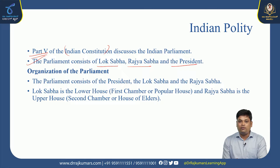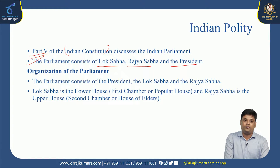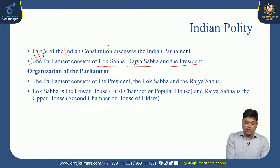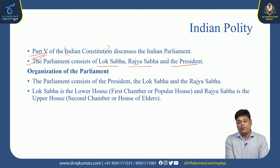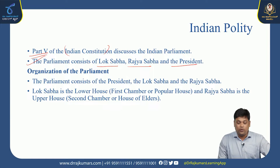This parliamentary form of government was adopted from the British Constitution because the British introduced bicameralism to India. Bicameralism means consisting of two houses — the Council of States and the Legislative Assembly. In later times it became Parliament, and as per our Indian Constitution, it consists of three branches: Lok Sabha, Rajya Sabha, and the President.